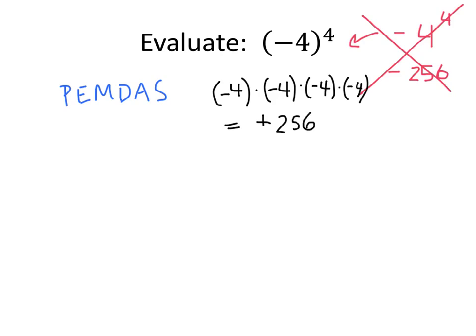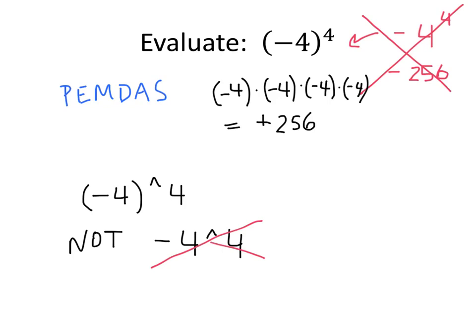So we have to make sure we're using parentheses correctly. If we were entering this on our calculator, we'd want to type negative 4 in parentheses raised to the fourth power, rather than minus 4 to the fourth power without parentheses — the latter gives the wrong answer, while the parenthesized expression gives us the positive 256 we're looking for.